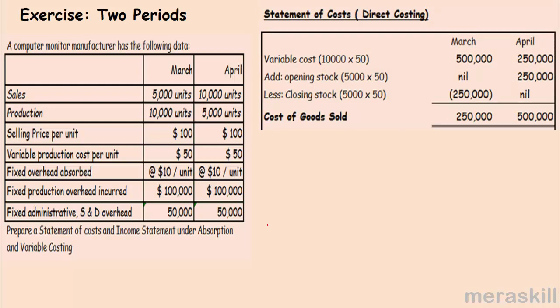Under direct costing, taking only variable cost: 10,000 units produced into 50 for March, and 5,000 into 50 for April. Opening stock is nil in March. Closing stock is 5,000 into 50 — because the variable cost is 50, you have 5,000 closing stock valued at 250,000. What is closing stock in March will be opening stock in April. Cost of goods sold: 250,000 and 500,000.